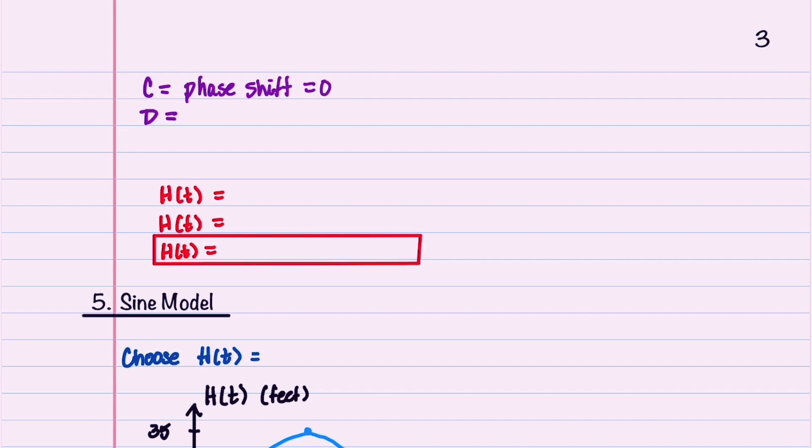D is our midline and is equal to the maximum value of h plus the minimum value of h all divided by 2. So that gives us 35 plus 5 divided by 2, which is equal to 20.